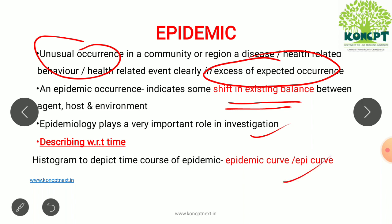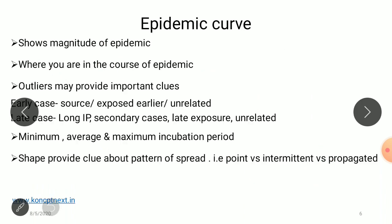When we describe an epidemic with respect to time, it is represented pictorially and it is called the epidemic curve. The epidemic curve shows the magnitude and gives important clues about the source of the disease as well as the minimum and maximum incubation period. The shape also tells us whether it is a point source epidemic or a propagated epidemic.